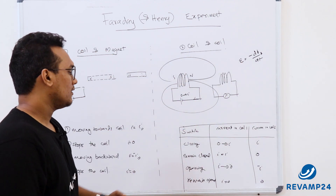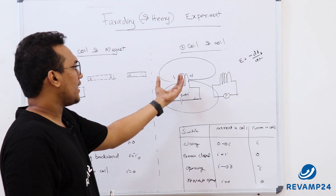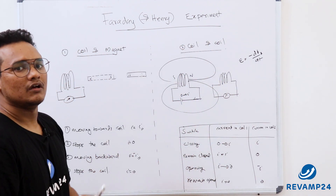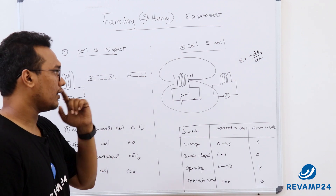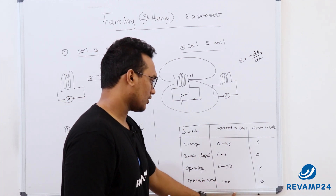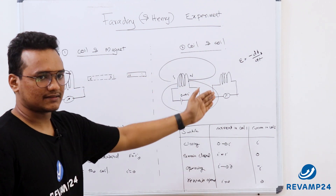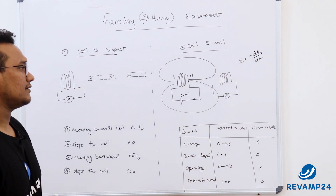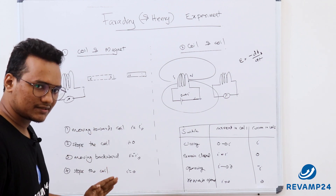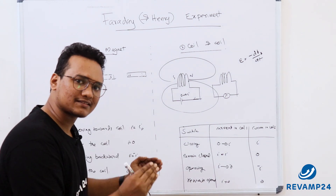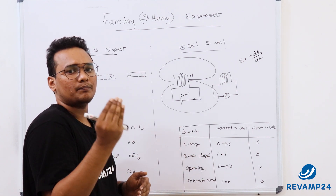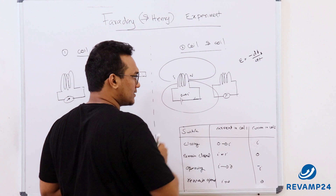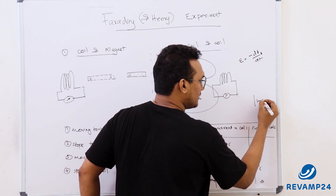When the switch remains open, the magnetic flux linkage due to the first coil on the second coil is zero — there are no field lines to link. So flux linkage is zero, zero remains zero, there is no change, and no current is induced in the second coil. It is always the change in magnetic flux linked with the coil that produces an induced EMF.